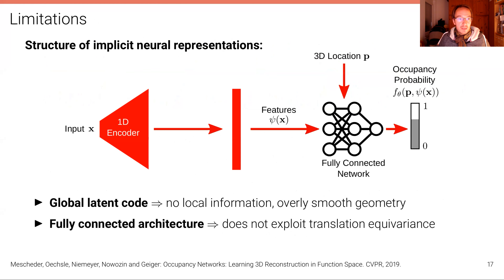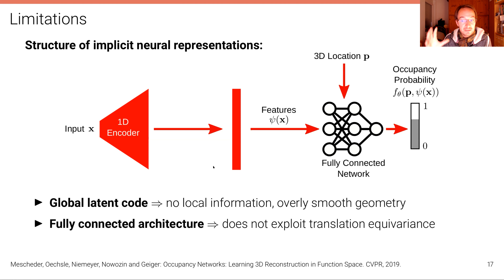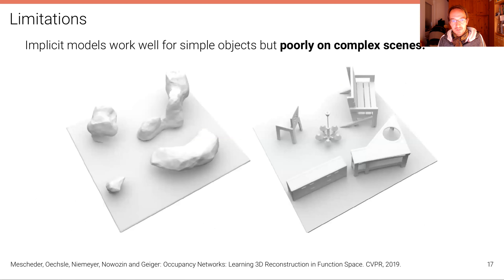However, these implicit neural representations also have some limitations. One problem is the structure: from an input like an image, we encode it into a global latent code, meaning there's no local information from the original high-dimensional input present anymore. It's very difficult in this global latent code to express a lot of local geometric detail. Also, we use a simple fully connected architecture that doesn't exploit properties like translation equivariance in convolutional networks. This leads to implicit models working well for simple objects but quite poorly on complex scenes.